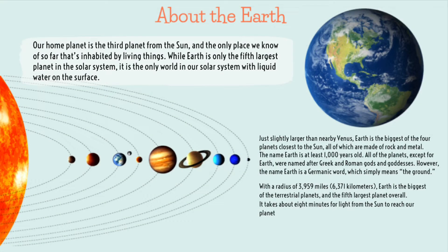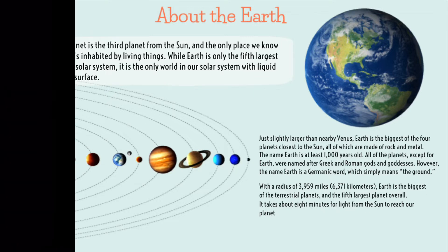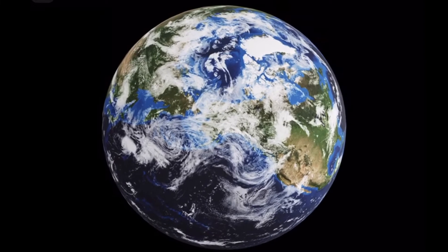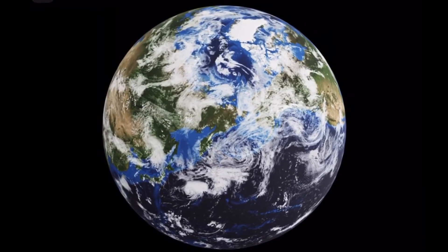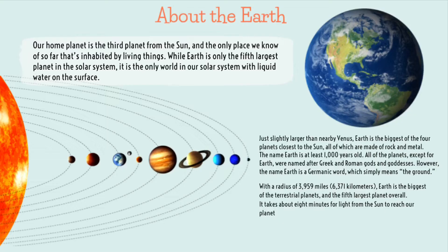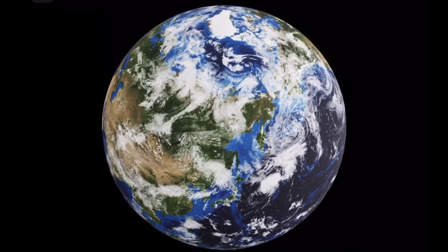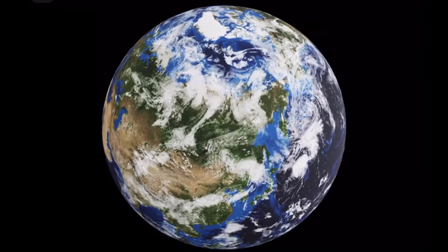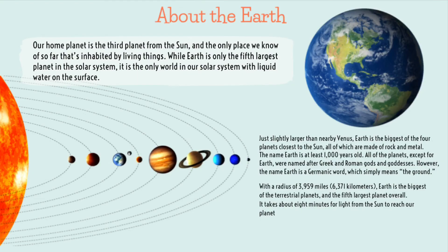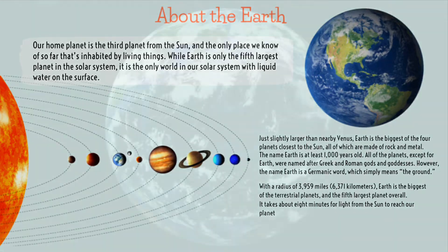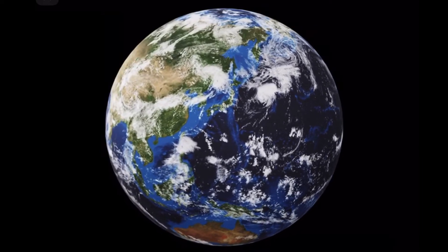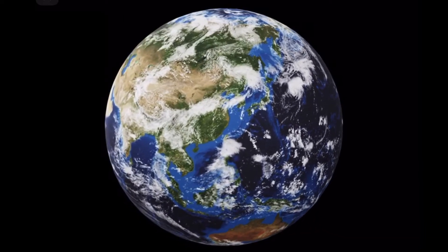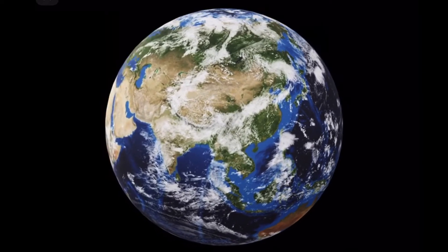The earth, our homeland, is a dynamic planet, which means it is constantly undergoing changes inside and outside. Our planet is the third planet from the Sun and the only place we know of so far that is inhabited by living things. While Earth is only the fifth largest planet in the solar system, it is the only world with liquid water on the surface. Although only slightly larger than nearby Venus, Earth is the biggest of the four planets closest to the Sun, all of which are made up of rock and metal.